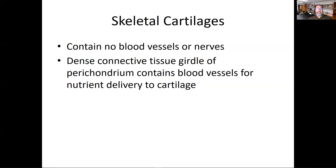Two key roots we're going to see in this discussion are 'chondro' — C-H-O-N-D-R-O — which you'll need to equate with cartilage, and 'osteo' or 'ossify,' related to bone. One interesting thing about cartilage is that it doesn't have its own blood vessels or nerve feed. It exists within a connective tissue surrounding called the perichondrium — peri meaning around — which contains all the blood vessels for nutrient delivery to the cartilage.